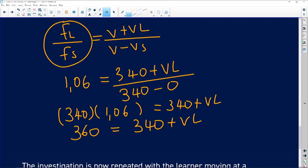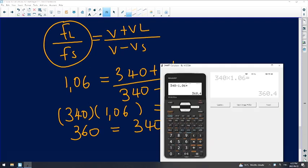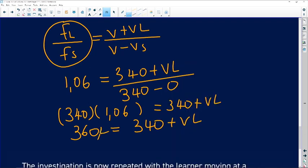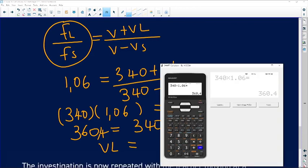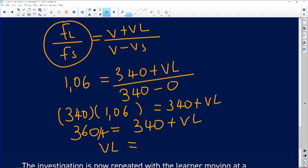But let's check this 360. If we never had a comma, it was comma 4. Don't forget that in the exam. All right, what would be our final answer now? VL. If I say 360.4 minus 340, I am going to get 20.4.